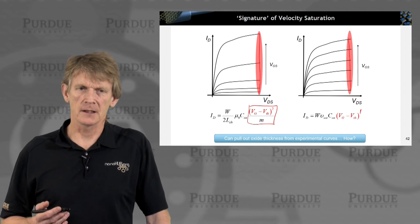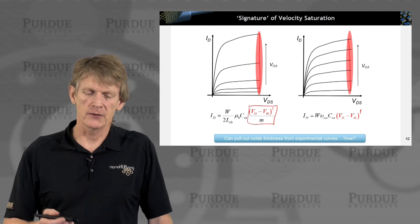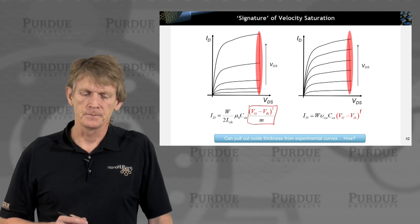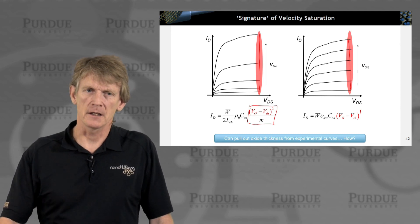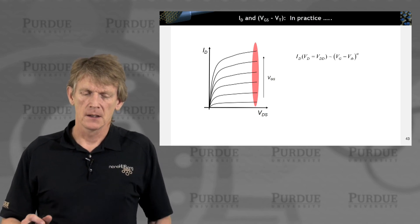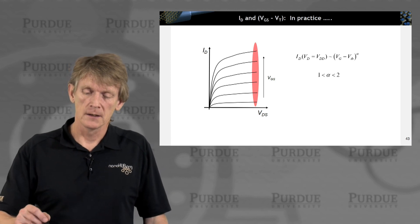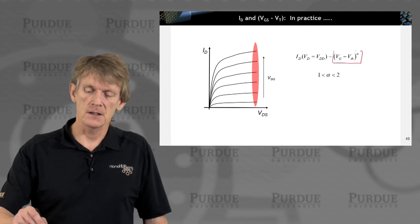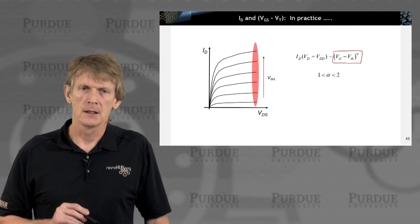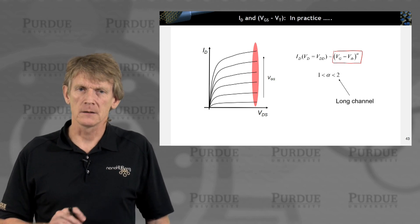So, you can measure that by the output characteristics of your transistor and measure effectively the separation of these lines for constant Vgs. All right. So, in practice that means you can measure transistors and your behavior is somewhere proportional Vg minus V threshold to a power of alpha, where alpha is between 1 and 2. So, if you're at 2, you're in the long channel limit. If you're at 1,